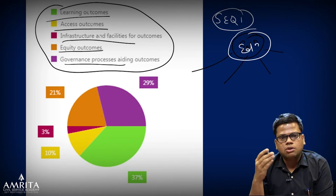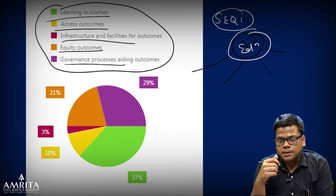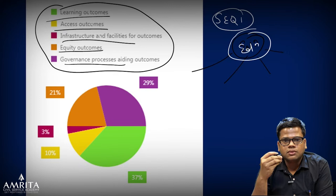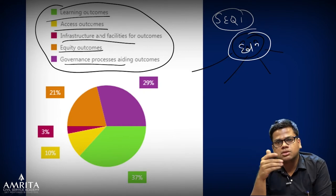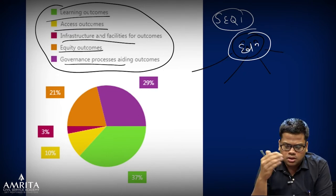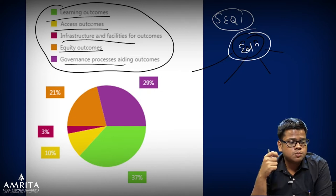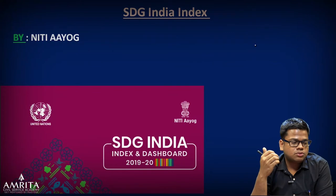The ASER report by Pratham shows that India has achieved schooling for all under the Right to Education, but India has not achieved learning for all — that's a big issue, a learning deficit. Access outcomes highlight accessibility issues, especially for the girl child — after a certain age they need sanitation facilities not available in schools, resulting in dropout. Equity outcomes relate to denotified tribes and vulnerable communities, and governance processes aid outcomes.